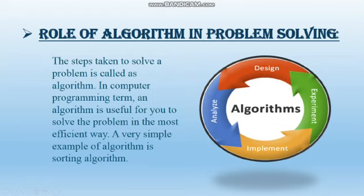The next topic is the role of algorithm in problem solving. Algorithm plays an important role in computer programming. Computer programming is the process of taking an algorithm and coding it in a programming language. Formulating an algorithm is the first step for developing a computer program. For writing the solution of a problem in a high-level language, we must make the algorithm first, then we can convert it. So the role of algorithm is very important in problem solving.